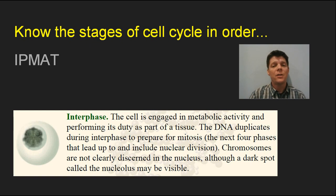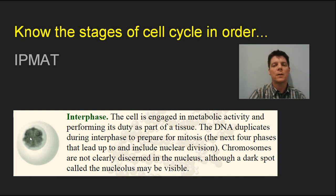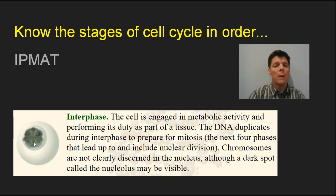It's important to know the stages of the cell cycle in order. Remember the mnemonic IPMAT. The first phase is interphase, which is not part of mitosis — it's the time cells spend between cell division cycles. During interphase, cells grow and copy their DNA. If you're looking at microscope slides, find the nucleus, which typically looks one consistent color. Sometimes you'll see a darker smaller dot inside the nucleus — the nucleolus, where ribosomes are assembled.